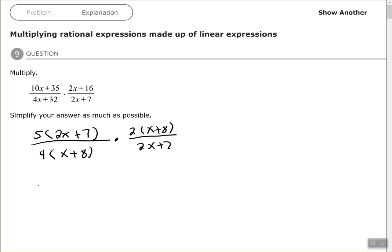If we write this in one fraction, I see that I have 5 times 2 here as my regular number, so I'm going to go ahead and multiply that out. Again, you don't have to; you can leave it as factored. So if I say that that's 10 times 2x plus 7 times the x plus 8 that was also in the numerator, all over 4 times x plus 8 times the 2x plus 7 that was in the other denominator. I can write this all in one fraction like this if I choose to, and then simplify.